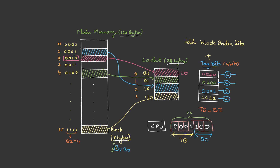The CPU knows the cache is full but doesn't know whether the requested block is available. To check, it compares the physical address tag bits with each line's tag bits. The first line doesn't match, the second doesn't match, but the third line matches. Therefore the CPU knows the requested block is available in cache — this is a hit. Based on the block offset it retrieves the corresponding byte.